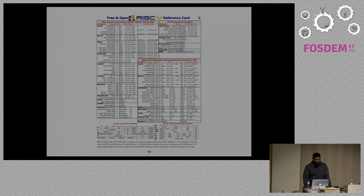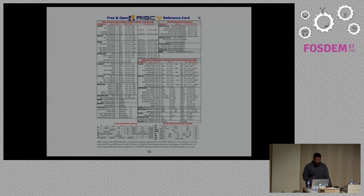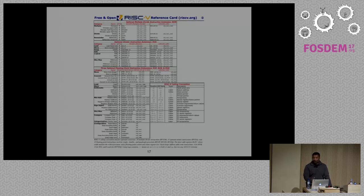The RISC-V ISA is small enough to fit on a sheet of paper — a green card. The base integer instruction set lists all instructions in one column: loads, stores, shifts, arithmetic operations, logical operations, compares, branches, and so on. It's pretty familiar if you've done any hacking on any RISC ISA. The instruction formats are designed to be efficient for hardware implementers. The back of the sheet includes the optional compressed extension for better code density, the multiply, atomics, and floating point extensions, plus the RISC-V calling convention.